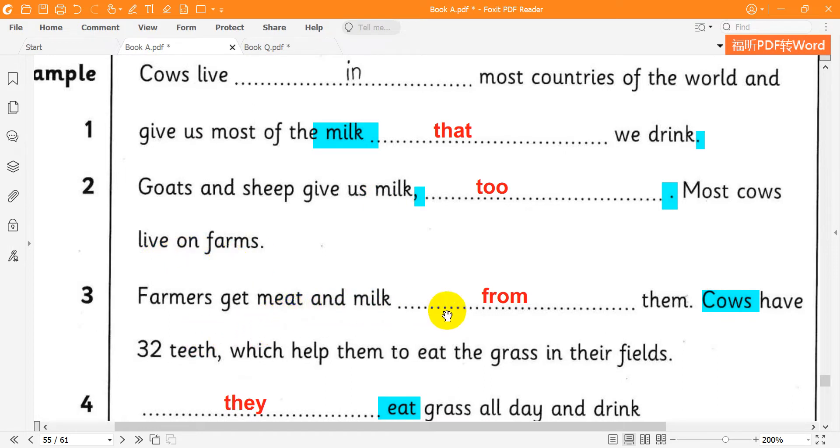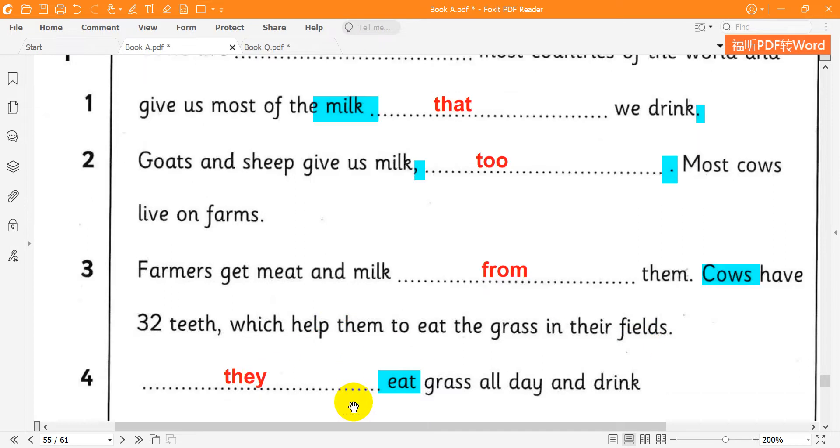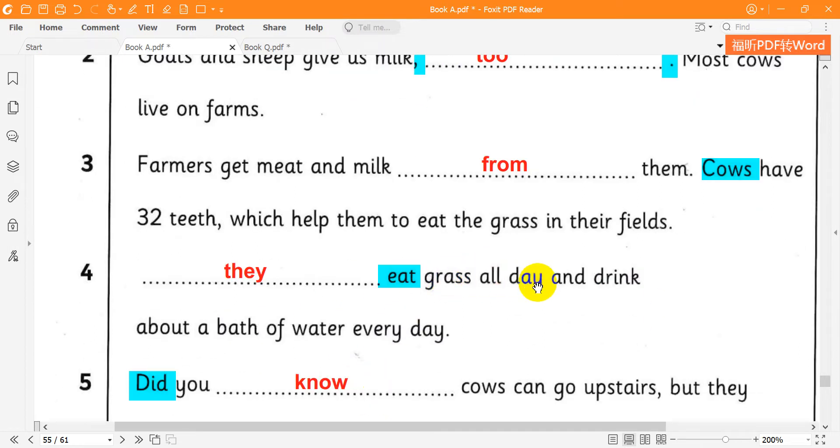Farmers get meat and milk from them. Cows have 32 teeth, which help them to eat the grass in their fields. They eat grass all day and drink about a bath of water every day.